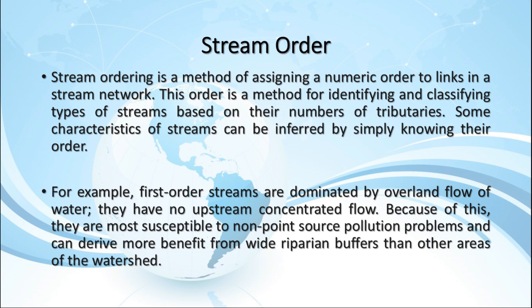For example, first-order streams are dominated by overland flow of water. They have no upstream concentrated flow. Because of this, they are most susceptible to non-point source pollution problems and can derive more benefit from wide riparian buffers than other areas of the watershed.